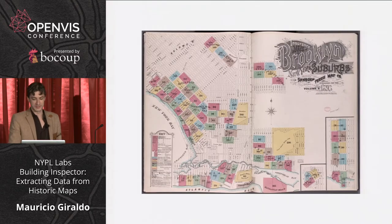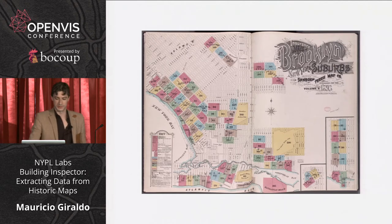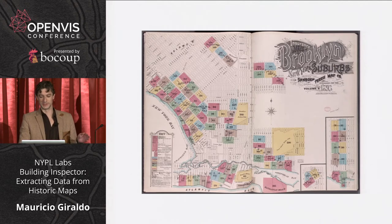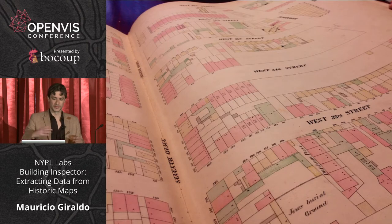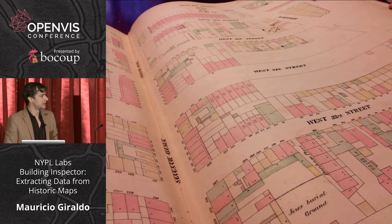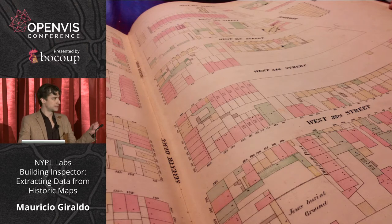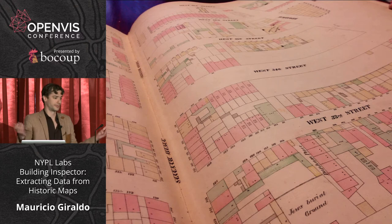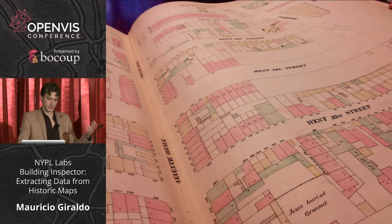I'm going to talk about a specific set of maps: the atlas of insurance atlases. Back in the day — the mid-1800s — insurance companies would send surveyors throughout cities across the US and Europe to draw each one of the buildings, color code them, and add some extra metadata, which would inform, in the case of an accident or something burning up, the value of the property for insurance claims.